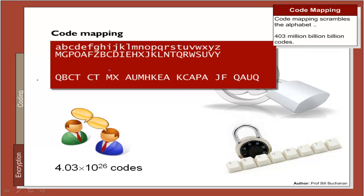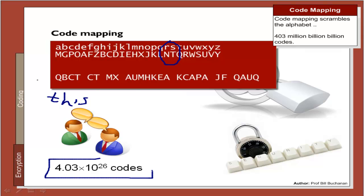A more advanced version is to scramble the alphabet. In this case the letters have been scrambled, so a Q is a T, B is an H, C is an I, and T is an S. The advantage is that we now have 4 times 26 factorial — that's 403 million billion billion codes — so it looks like a fairly secure coding system.